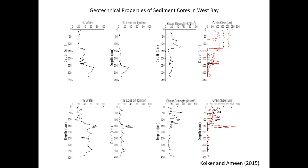One more question from Willem: what do you mean by percent loss on ignition? Loss on ignition is a proxy for organic content. Very simply, you put the sediment in a muffle furnace for six hours and combust it at 550°C. Everything that burns is assumed to be organic. So if you have an LOI of 20, that means 20% of the dry weight combusted at 550°C — and at that temperature, you're burning off pretty much all the organics but not too much else. It's a nice, simple way of quantifying organic content.